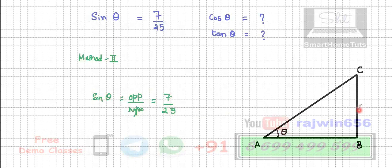So the opposite side of this is BC, that is 7, and hypotenuse over here is 25. Now this is your right angle triangle.